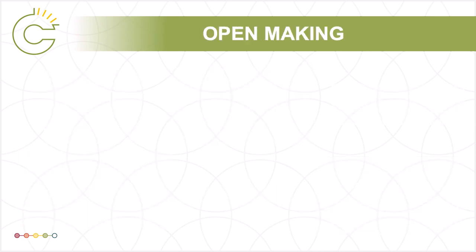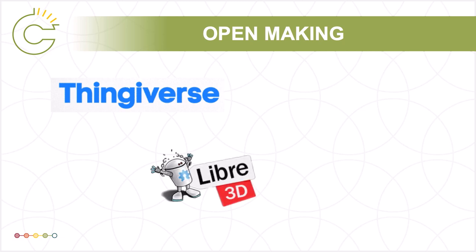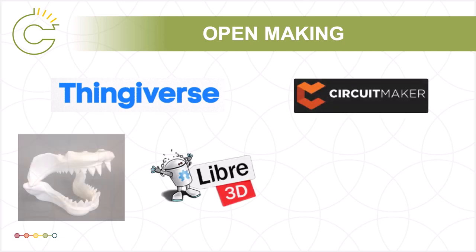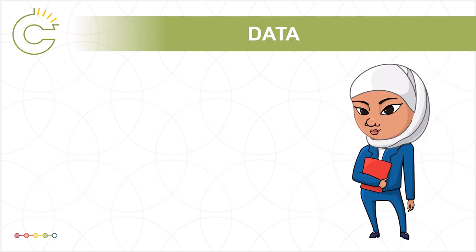Even the maker movement has caught the open licensing bug. Sites like Thingiverse, Libra3D, and CircuitMaker will help Ira find files for 3D printing and electronics, from simple objects to complete designs for robots and machines.